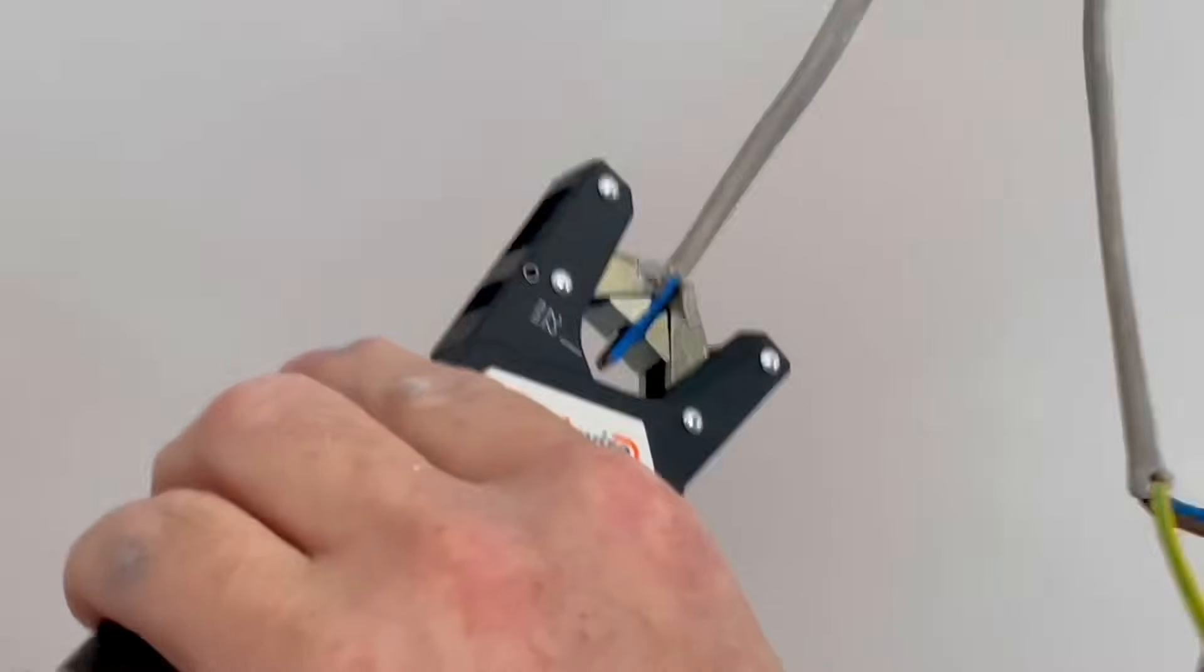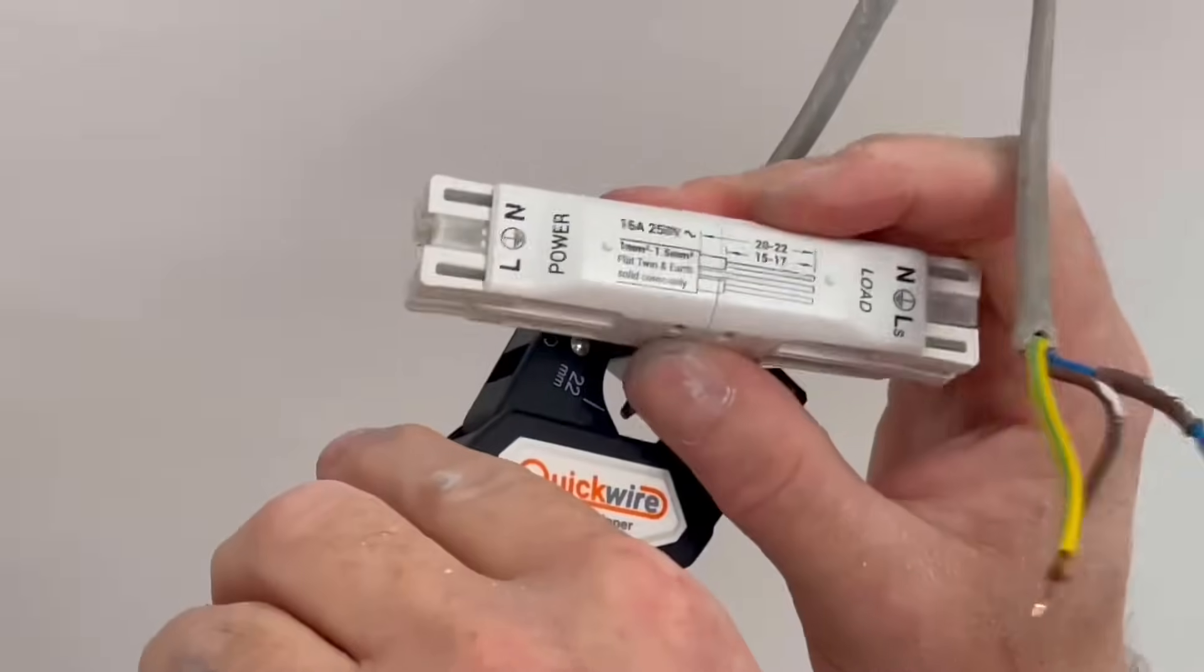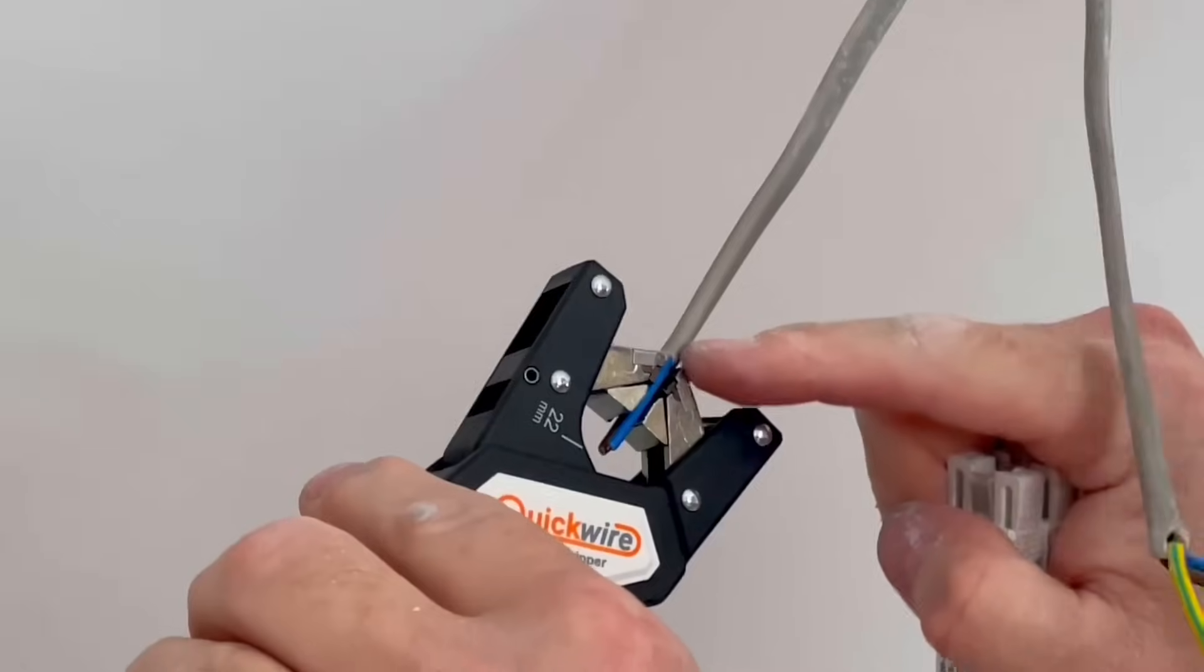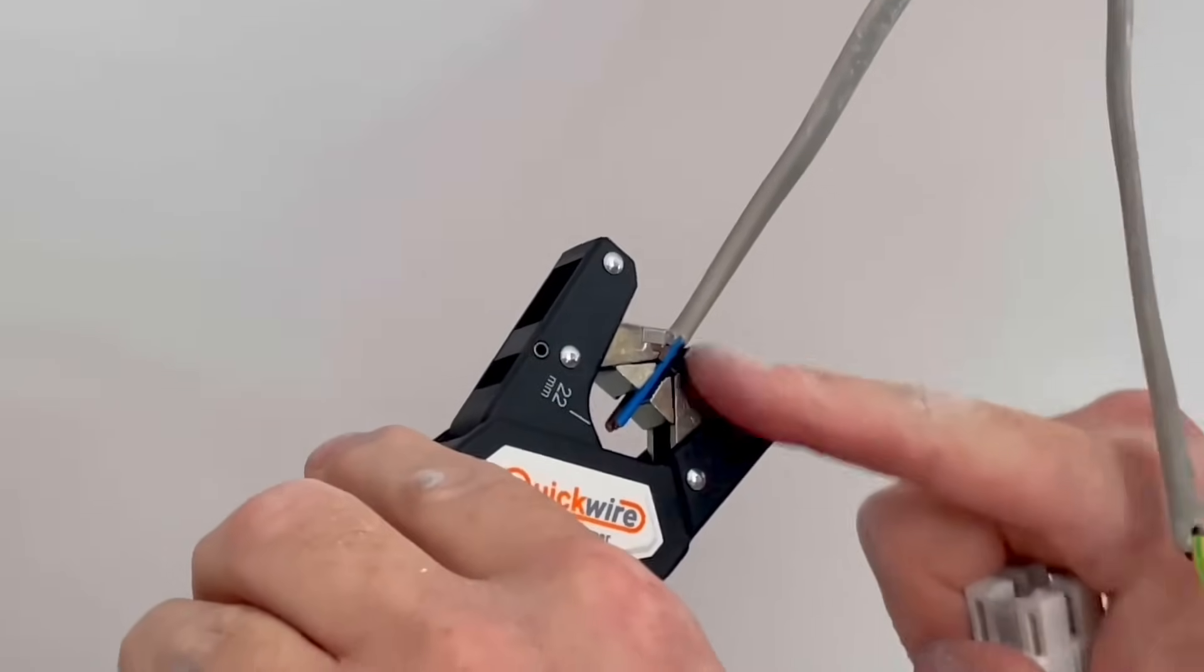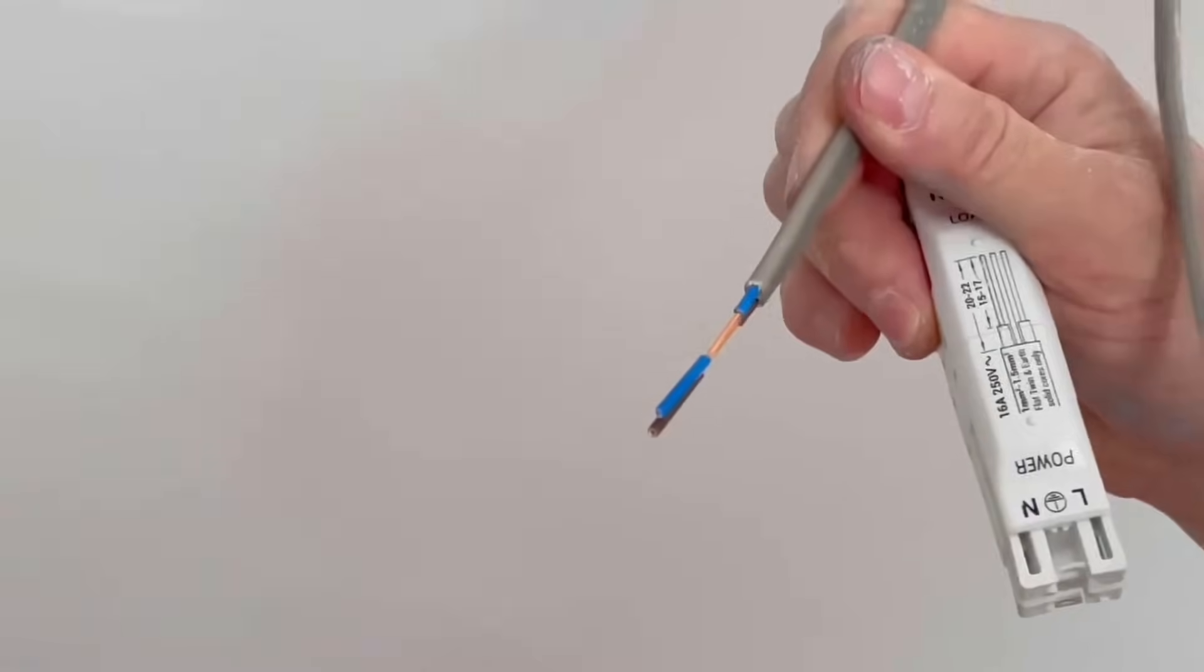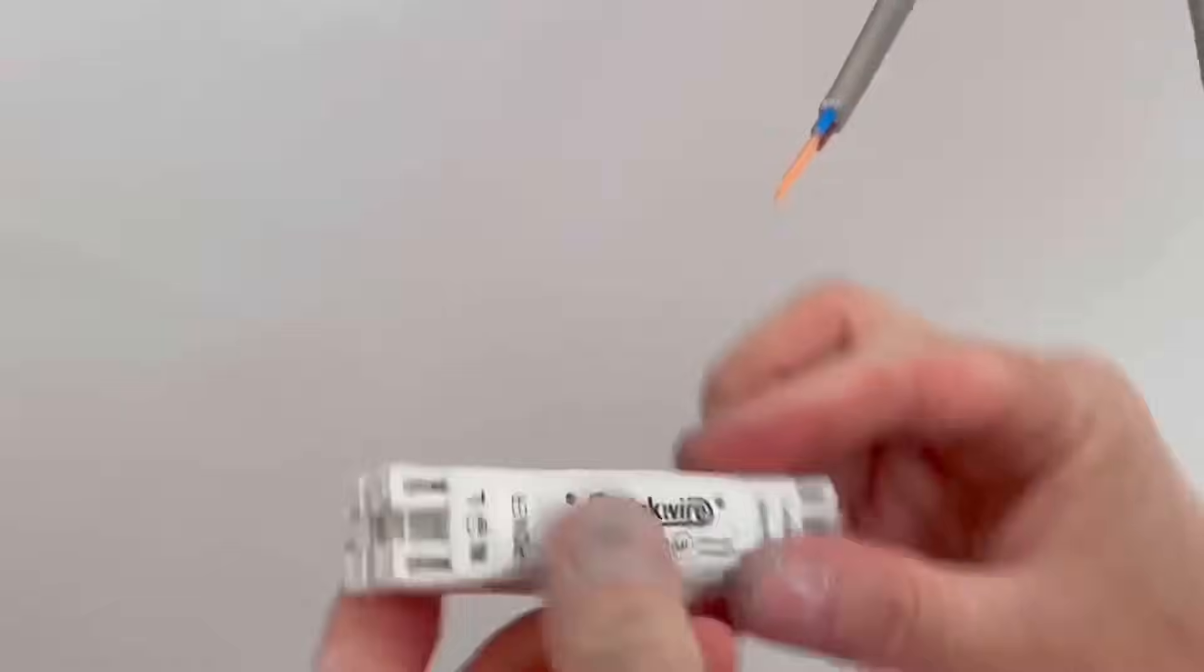Next one, the length is the end of the grey sheath to there. It gives me my actual conductor length that I need to strip off. The conductor length is stated on here between 15mm and 17mm but if you use that as a barometer, so in other words the grey PVC sheath at the end of the stripping tool you get it right. We pull those off.